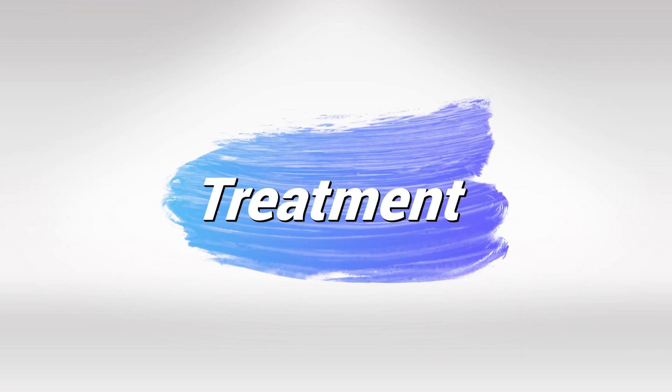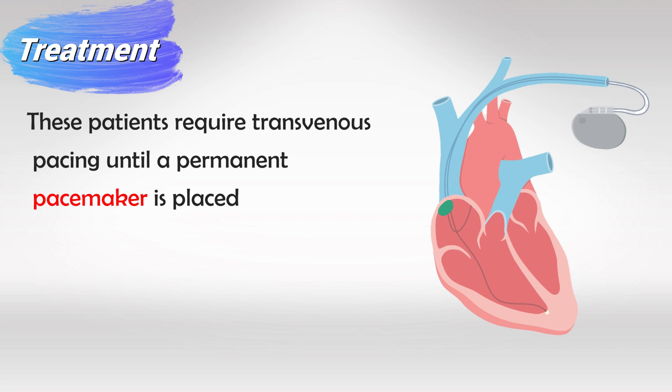The definitive treatment is a pacemaker. This essentially overrides the cardiac electricity and causes the atria to contract first, followed by the ventricles, and it is very specific and will not miss any beats. Pacemakers can be either temporary or permanent. The definitive treatment is a permanent pacemaker, but since this cannot always be installed quickly, we opt for a temporary pacemaker until the permanent one is placed.